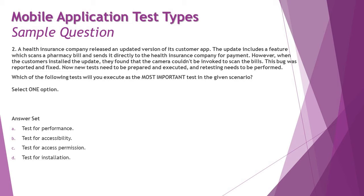Moving to question two — a scenario-based question. A health insurance company released an updated version of its customer app. The update includes a feature that scans pharmacy bills and sends them directly to the health insurance company for payment. However, when customers installed the update, they found the camera could not be invoked to scan the bills. This bug was reported and fixed. Now new tests need to be prepared, executed, and retesting performed for the defect. Which of the following is the most important test to execute?